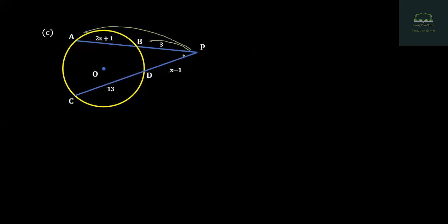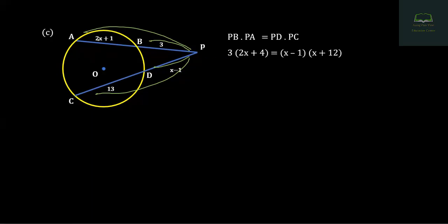P, P into B, P, T into P, C. After being done, P, P is 3. P is 2S plus 4. Then P, P is S minus 1. P, C is S minus 1 plus S plus 2.